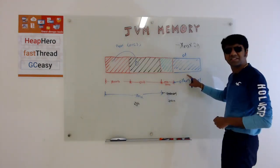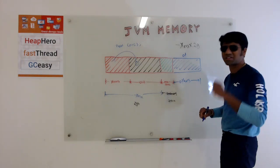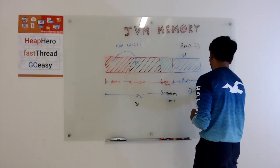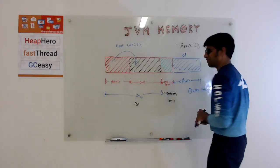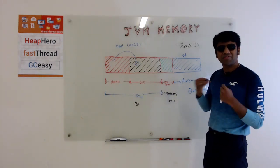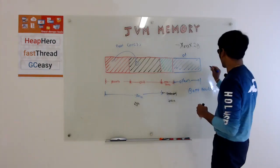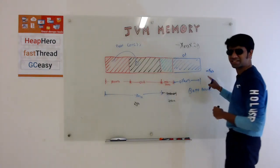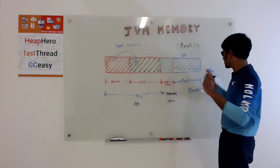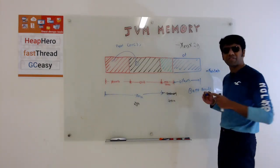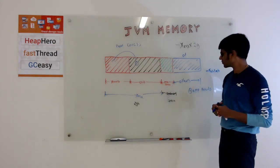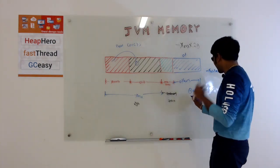So this is the region where threads are stored, your application threads. One thread takes memory. You can define your thread size by this property called XSS. There you can define what is the size of just one thread. Say suppose you are defining it as 1 MB. If your application is creating like 200 threads, then it's going to take 200 MB more.